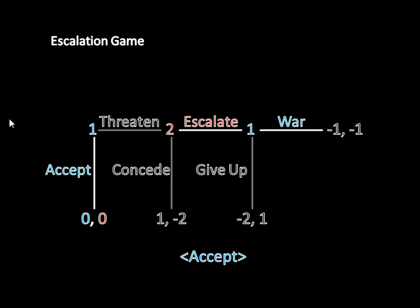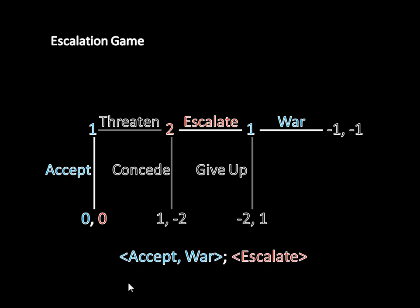The reason it's rational is because if player 1 threatens, that causes player 2 to escalate, which causes player 1 to declare war, and then player 1 ends up getting negative 1. So the only way we can judge the quality of the outcome where player 1 just accepts is by knowing what happens if player 1 chooses something else. If the full subgame perfect equilibrium is player 1 accepts and then declares war, and player 2 escalates, then we know accept is good because threatening leads to escalation, which leads to war — a worse outcome for player 1.